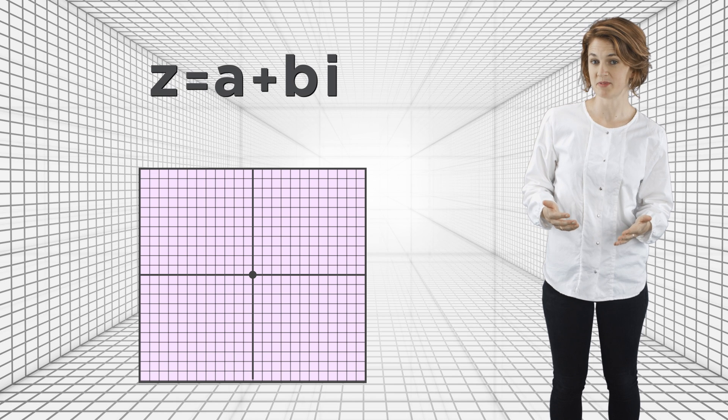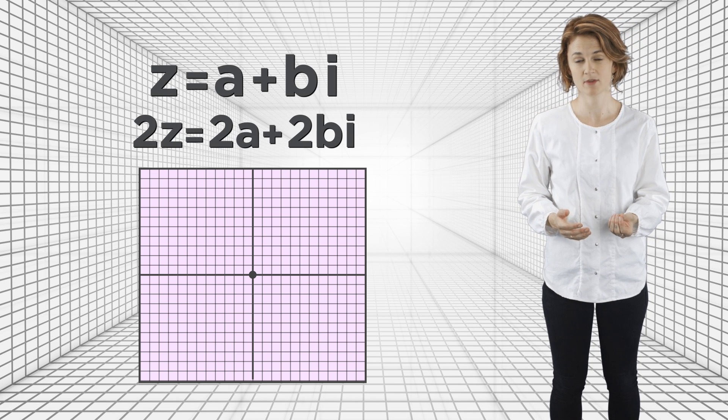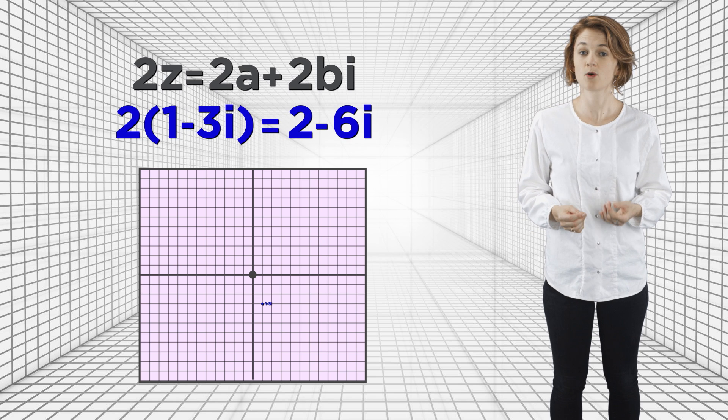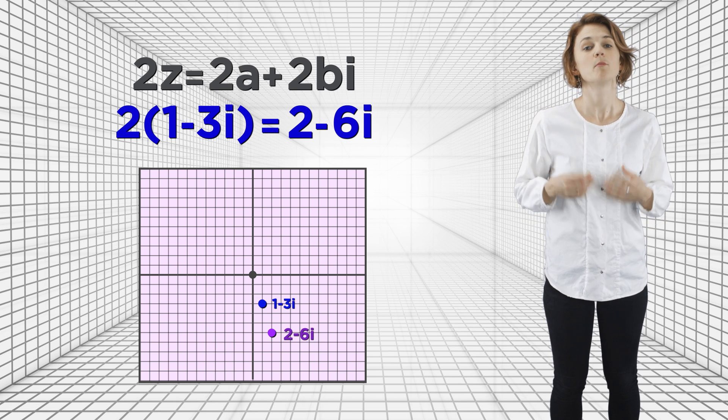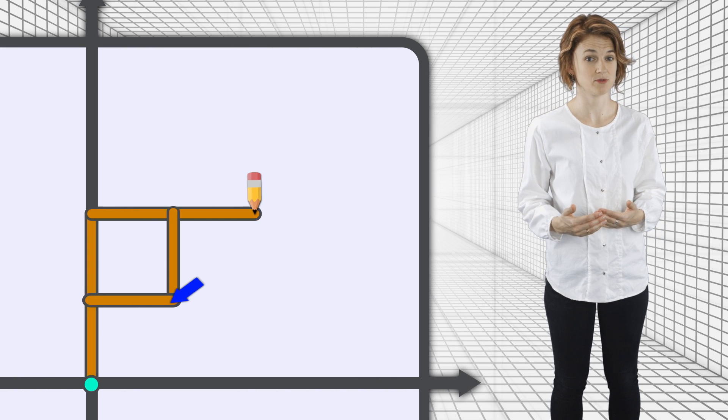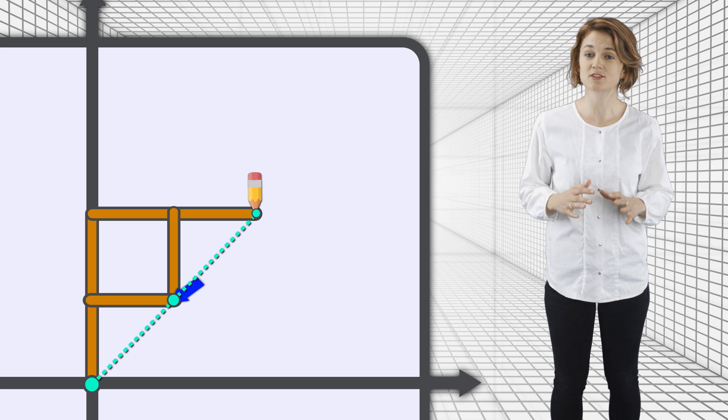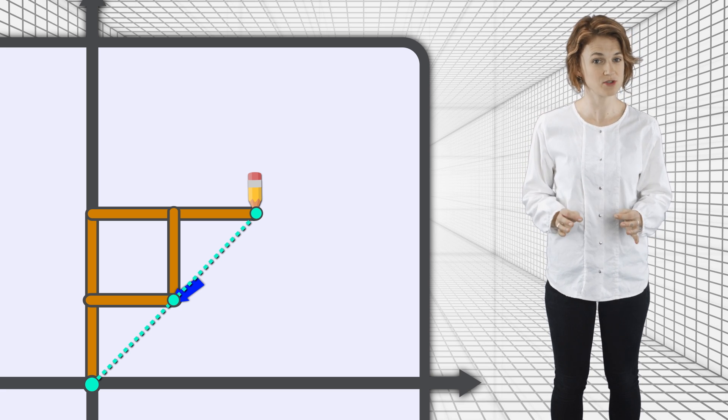If z equals a plus bi, then 2z equals 2a plus 2bi. For example, 2 times 1 minus 3i is 2 minus 6i. Multiplying a complex number by 2 just means multiplying both the real part and the complex part by 2. The point moves twice as far away from the origin. And that's exactly what the pantograph is doing.